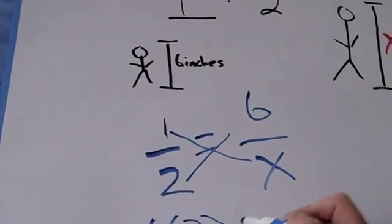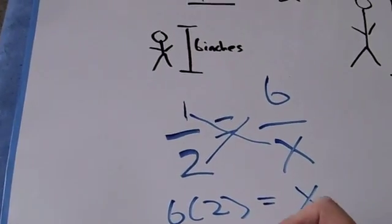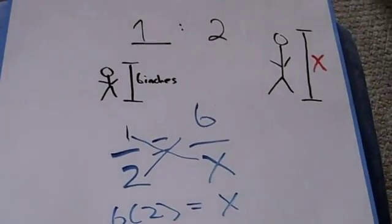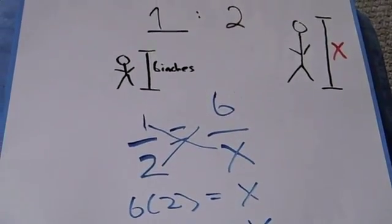x is equal to 2 times 6. x, therefore, is equal to 12. 12 is the height of the actual dog.